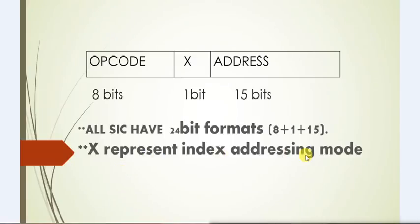In the later section we will study about addressing modes, but for now we will only see the formats. So the first field, 8 bits, is opcode. The second field is X and the third field is address.